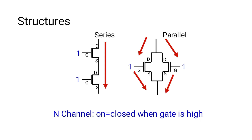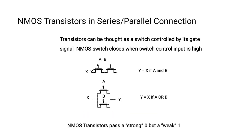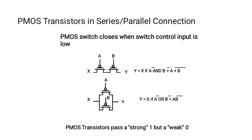In a series connection, where source-to-drain connects two transistors, we represent the operation as A·B (A AND B). In a parallel connection, where drain-to-drain and source-to-source are connected, it represents A+B (A OR B). This applies to NMOS. In PMOS the operation reverses: when both PMOS transistors are in series the operation becomes A+B, and when both are in parallel the operation becomes A·B.